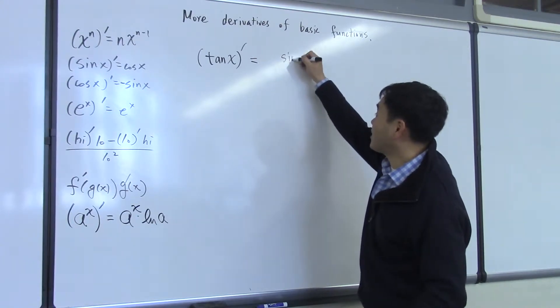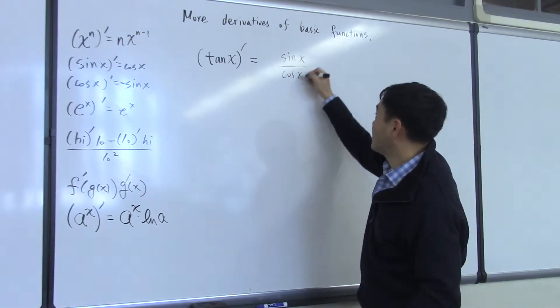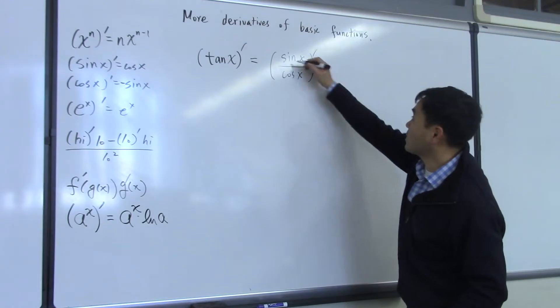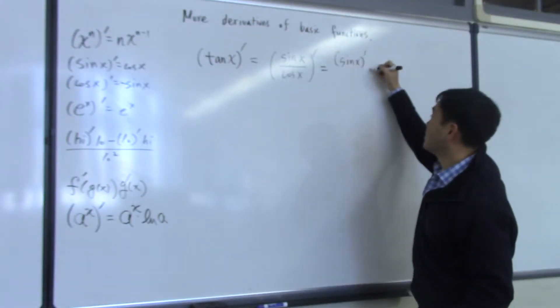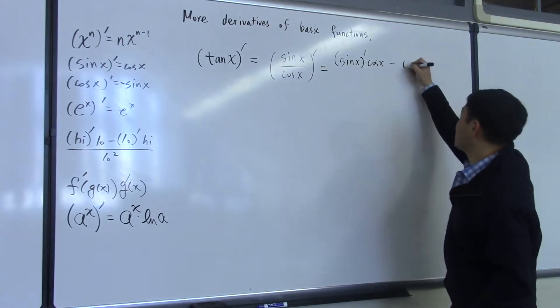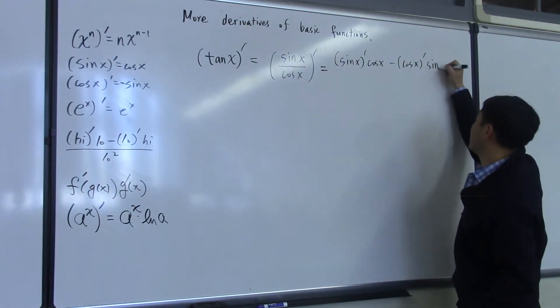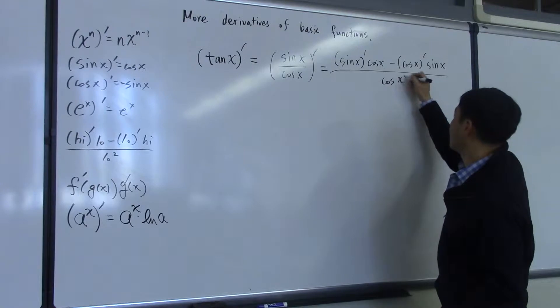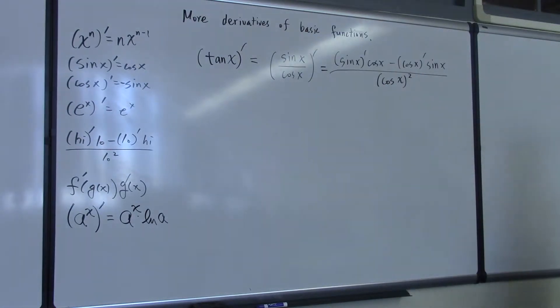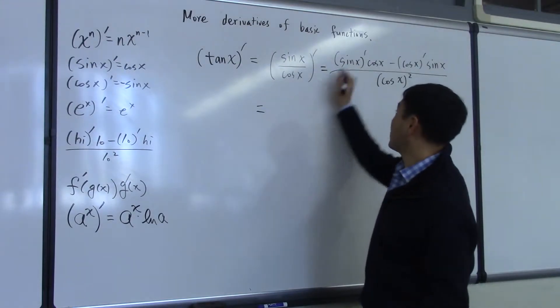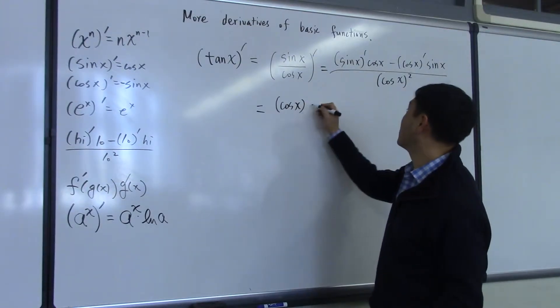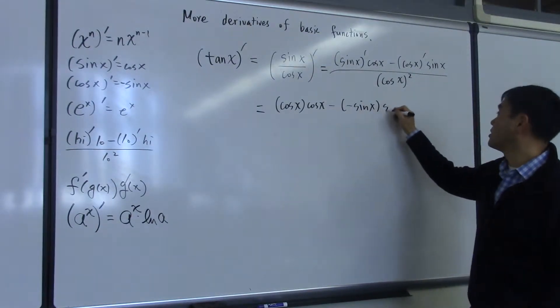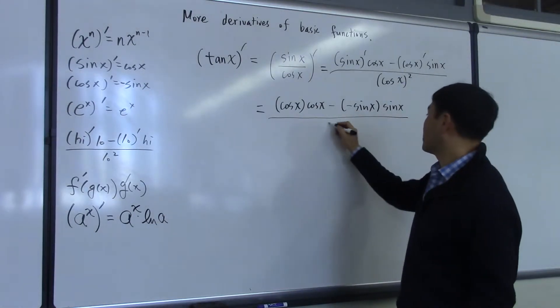Quotient. Yeah, tangent is sine over cosine, so when you differentiate this, you can make use of the quotient rule, which says high d-low minus low d-high over low squared. And then sine differentiates to cosine, cosine differentiates to negative sine, and cosine squared.